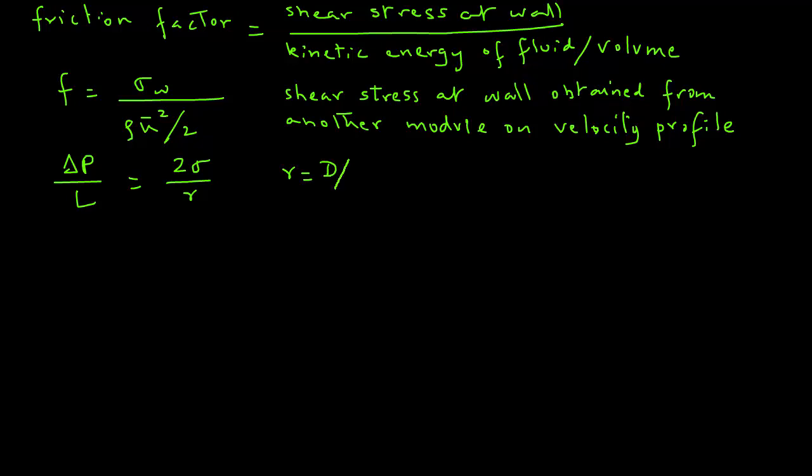Again, sigma is the shear stress. So we can modify this expression to adapt it to the inside pipe surface because the friction is going to be at the inside pipe surface. So instead of using R, which is radius, we will convert that to diameter divided by 2. So then we have delta p over L equals 4 sigma divided by D, where D is the diameter.